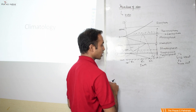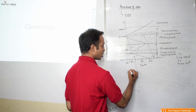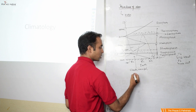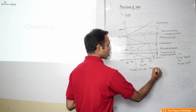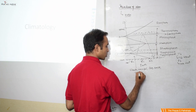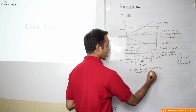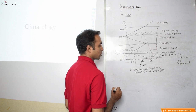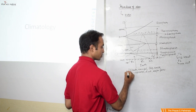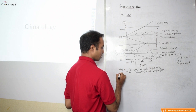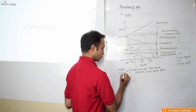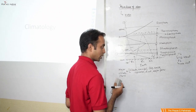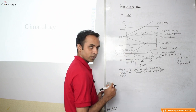In the troposphere, as height increases, temperature decreases — by 1 degree Celsius after every 165 meters increase in height. Similarly, pressure also decreases by 1 millibar after every 10 meters increase. In the stratosphere, temperature increases because of the ozone layer. In the mesosphere, temperature decreases as there is no such layer. In the thermosphere, temperature increases because of the ionosphere. The range mentioned for the troposphere has a reason — the troposphere is not exactly flat and horizontal.